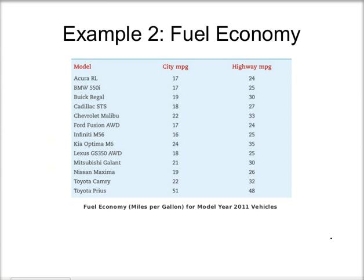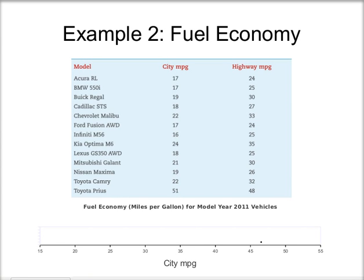Let's look at another example. This chart shows fuel economy of some 2011 model year vehicles, and we're going to look at the city miles per gallon and make a dot plot. First, I want to find what my range is. My smallest city miles per gallon looks like 16, and my highest is the Toyota Prius with 51. So I want a number line that includes everything from 16 to 51. To make it nicer, I'll go from 15 to 55, so the number line is split into intervals of 5.